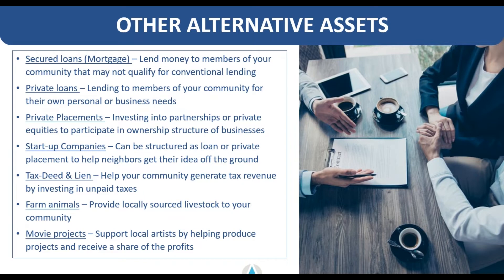Private placement investments, similar to syndications, can be made where you're basically investing into a portion of ownership — buying shares of stock of a private entity like a smaller bank in your community that might be opening, or any type of business that is offering public ownership. Your retirement account can own shares or stake in those types of companies through a private placement. Startup companies can also be invested by a retirement account, whether it's issuing a loan to the business owner or issuing an investment amount that represents a portion of ownership with returns or distributions to be made at a later point.